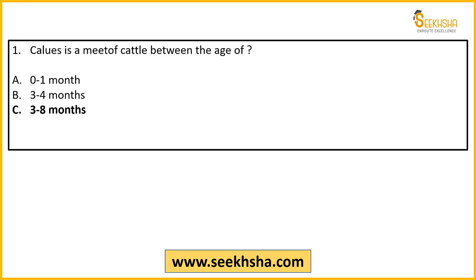So the right answer in this case is option number C — 3 to 8 months. Basically, the meat of young cattle in that age range is what we call Calus.